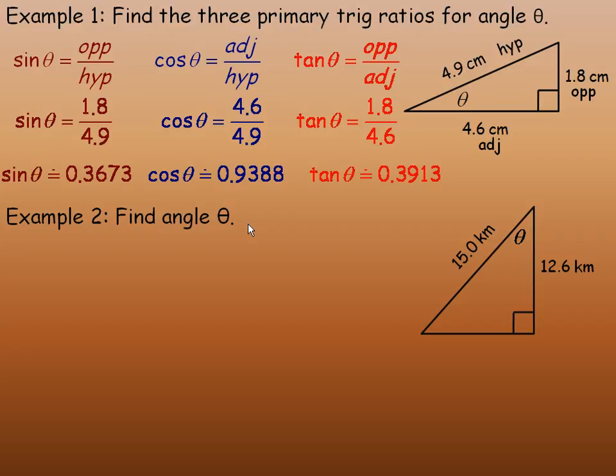In example 2, it says find angle theta here. So here's our diagram. Notice we only have two sides labeled.